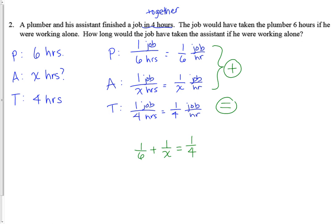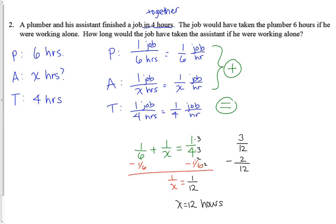I'll get one over x by itself by subtracting one sixth from both sides. So one over x equals one fourth minus one sixth. The common denominator is twelfths: one fourth is three twelfths and one sixth is two twelfths. Three twelfths minus two twelfths is one twelfth. So if one over x equals one over twelve, then x equals twelve. Does this seem reasonable? Yes — the assistant takes longer than the plumber, and it also takes longer for each of us individually than it took together.